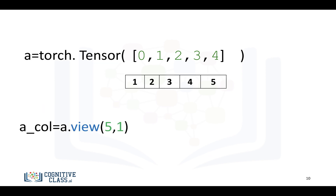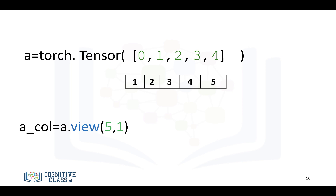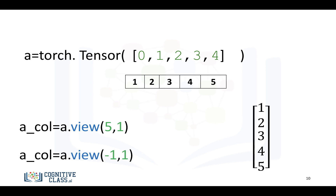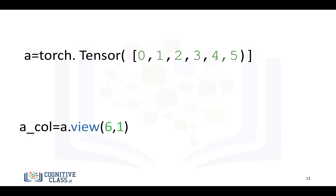Another thing we can do is reshape a tensor. If the tensor is basically one element long, we can convert it to a column tensor using the command view. It's helpful to visualize it as a column. We can use the argument negative 1 if we don't know the actual size of the tensor. For example, if we have 6 elements, instead of putting a 6 we put a negative 1, and we don't have to worry about the size — this will come in handy throughout the course.